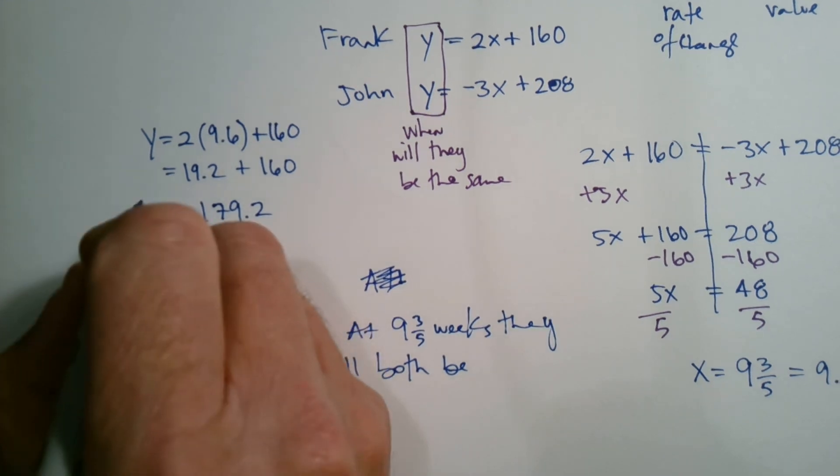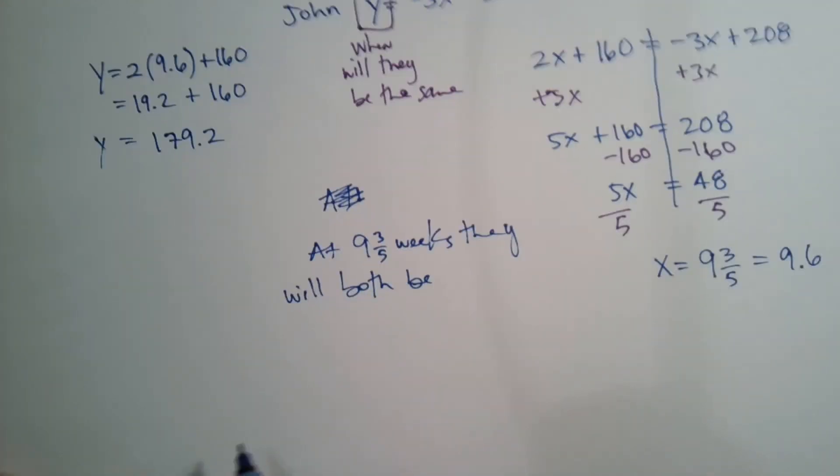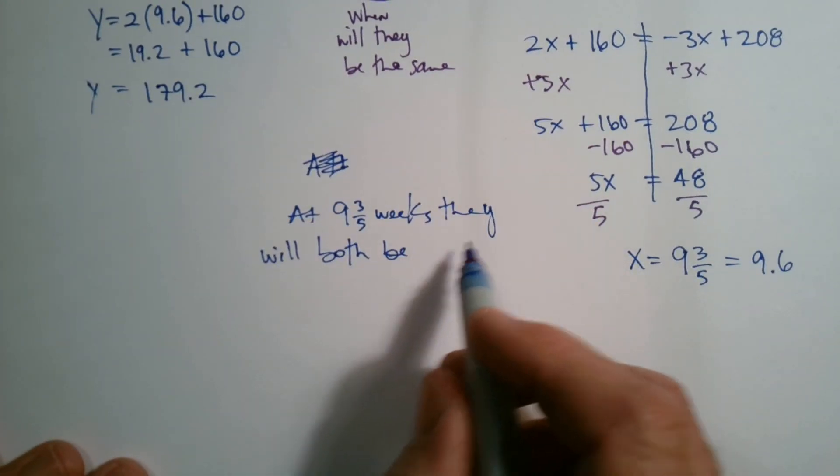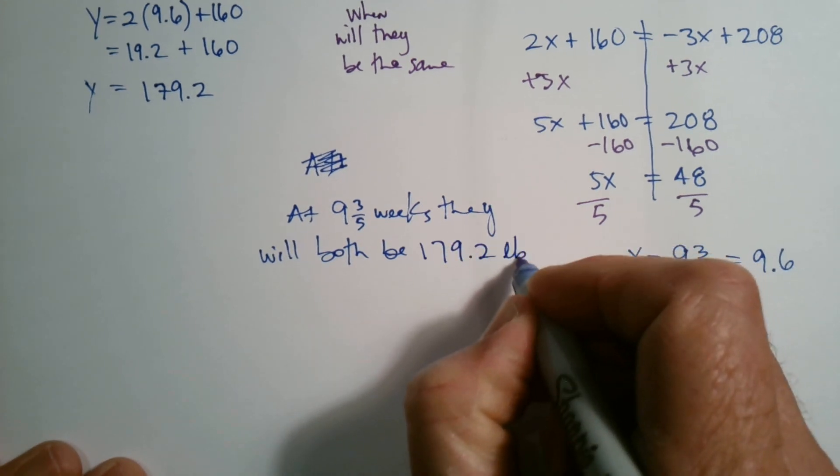So then I ended up adding those two and I get 179.2. So that's the Y when X is nine point six. So at nine and three fifths weeks, they will both be 179.2 pounds.